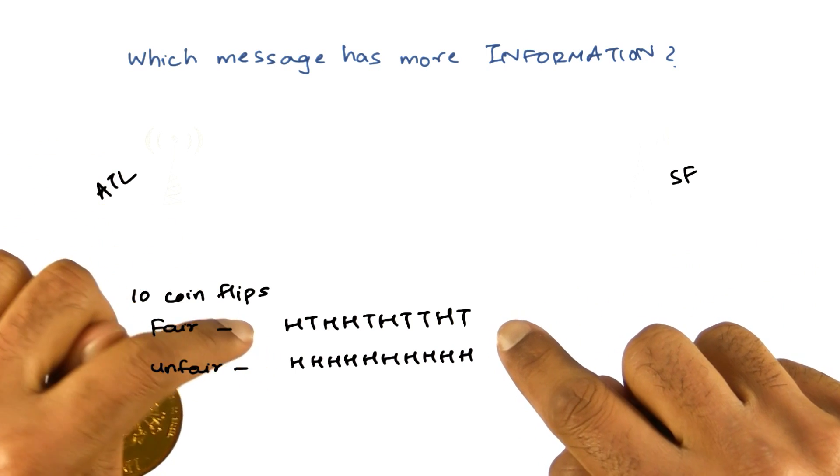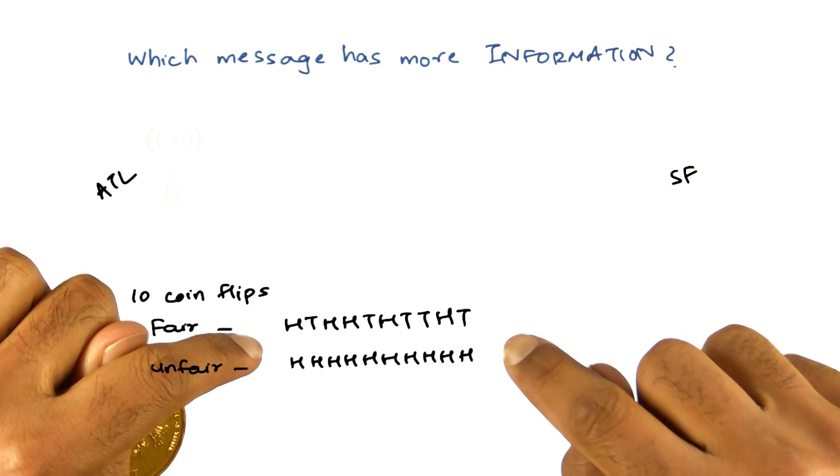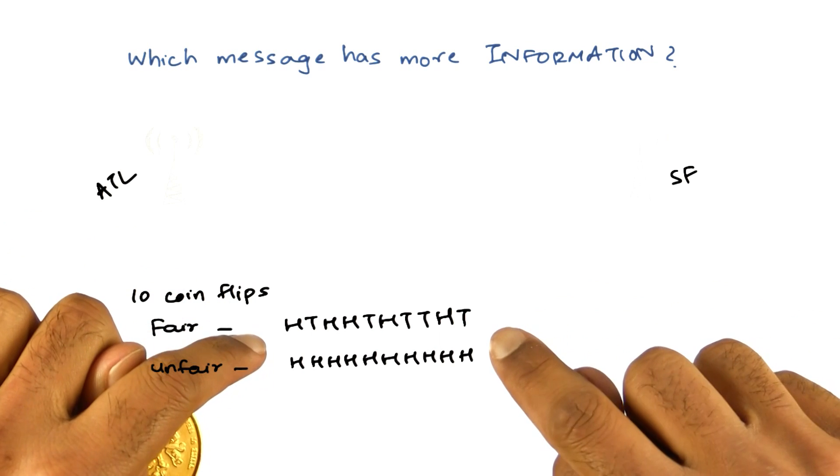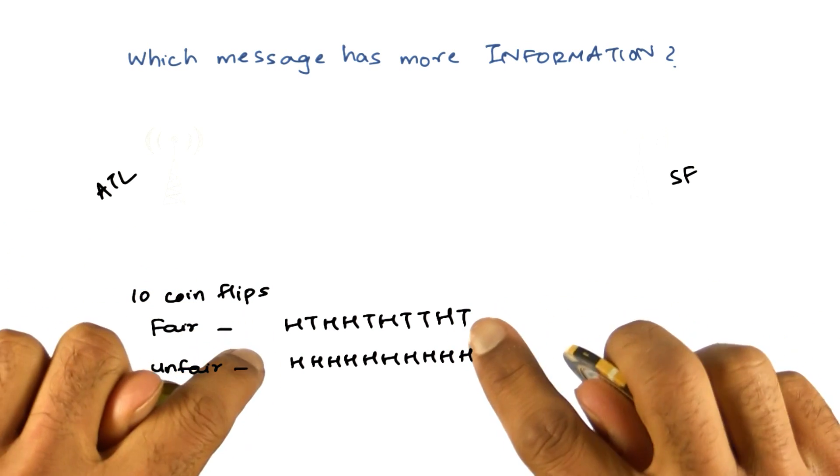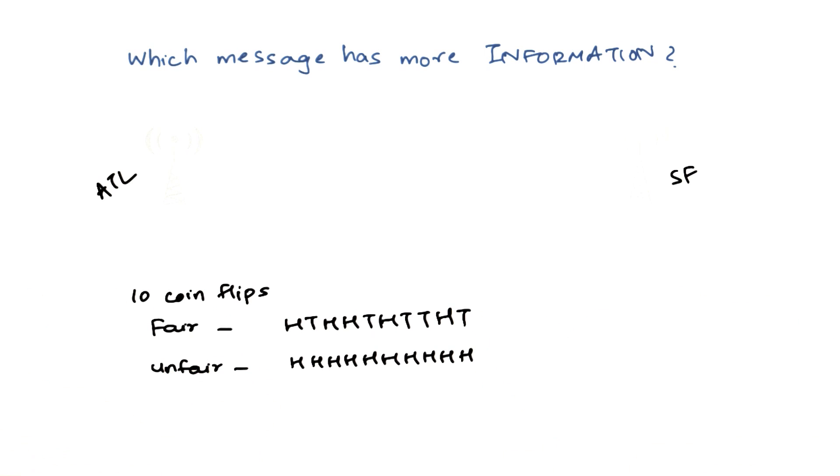If you also observe the fair coin, I have like five heads and five tails. So it is a fair coin.